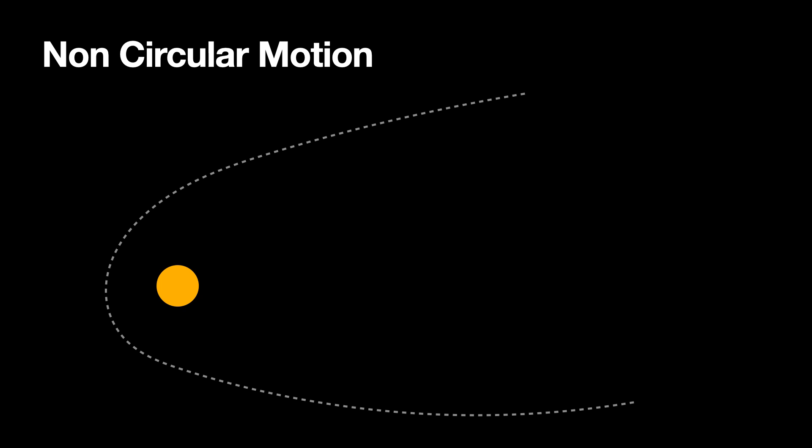What about non-circular motion — not a circle, but still changing direction? Here's the path of an object moving around the sun. At some instant it has momentum P1 in the direction of motion, and force F is pointing towards the star. The force is going to do two things: it's going to increase the magnitude of the momentum, and it's going to turn the object. We can break this force into two pieces — a component perpendicular to the momentum and one parallel to it.